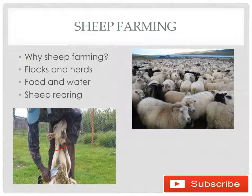Now, what is sheep farming? It is the rearing of domesticated animals so that we can obtain wool. Sheep farming is done commercially. In the picture you can see a group of sheep — this group is called a flock, and a larger group is called a herd.